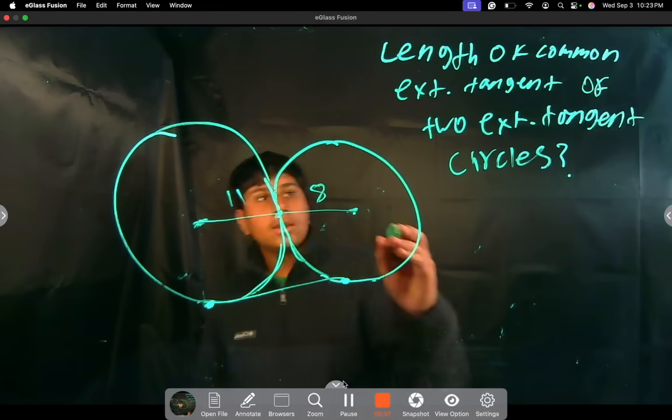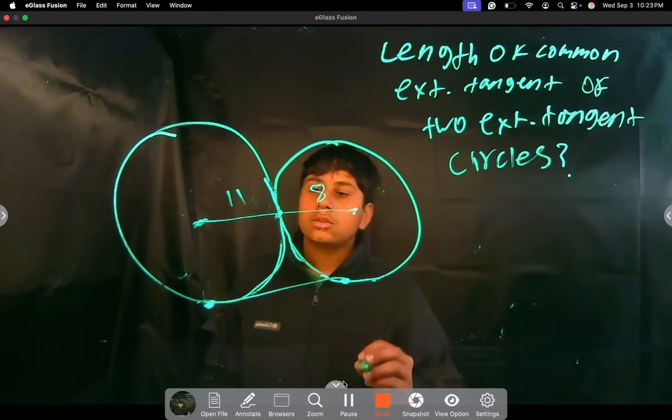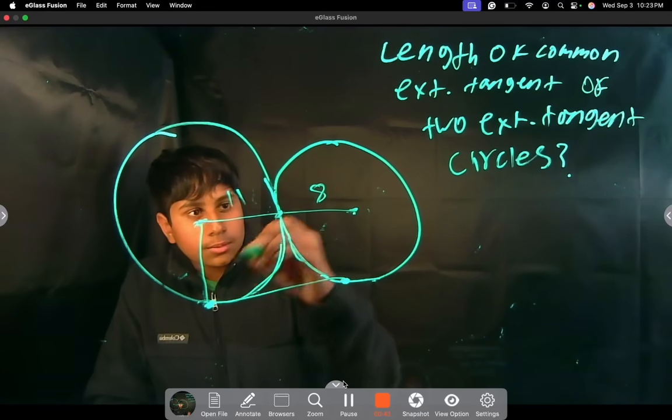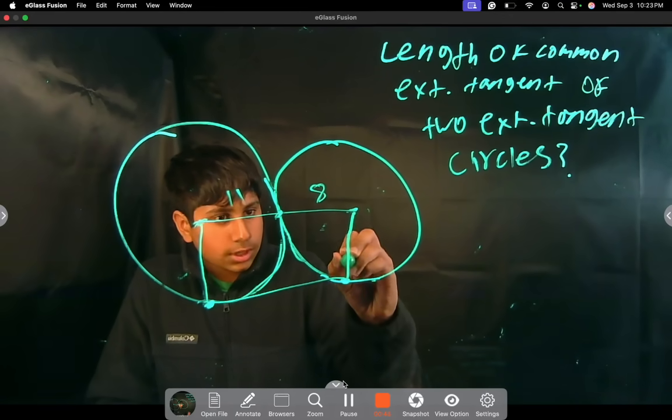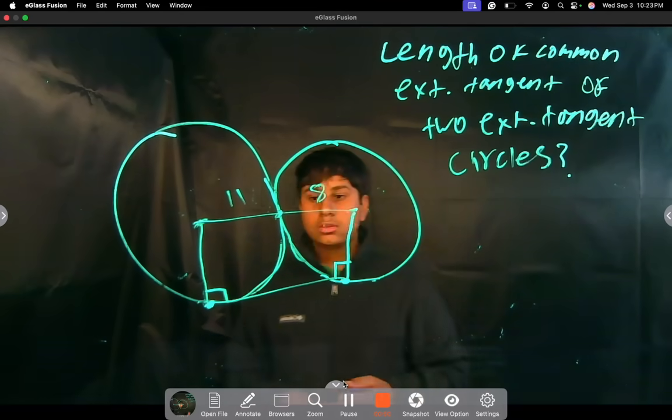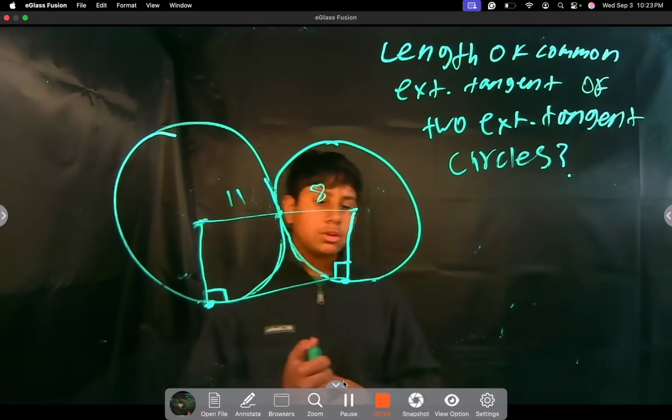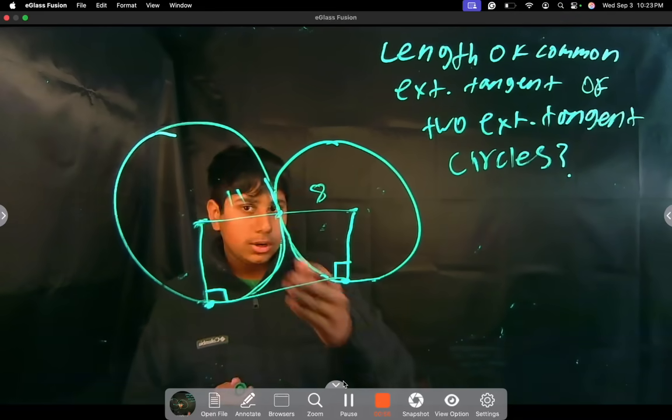We know the radii are 11 and 8 of these two circles. If we draw down a tangent line, this is always going to be 90 degrees because that's a property of tangent lines. A tangent line to a circle is always going to have a 90 degree angle with one of the radii lengths.